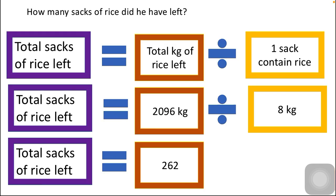The last step: how many sacks of rice did he have left? We have figured out the total kg of rice left, but we need to find the number of sacks. The formula is: total sacks of rice equals total kg of rice left divided by one sack containing rice. We already know the total kg of rice left is 2096 kg and one sack contains 8 kg.